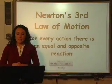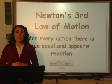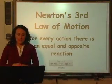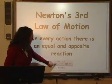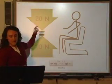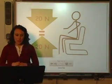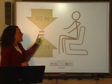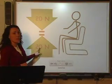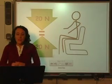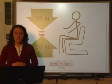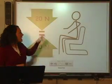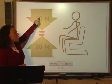This statement means that in every interaction, there is a pair of forces acting on each other. The size of the force is equal to the size of the opposite force — 20 newtons pushing down, 20 newtons pushing up. The direction of the force of the first object is opposite to the direction of the force of the second object: down and up, but equal amounts.